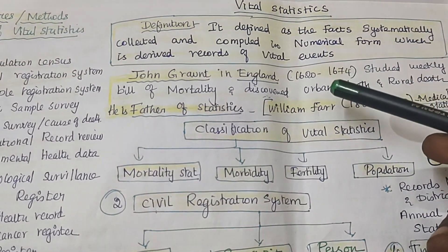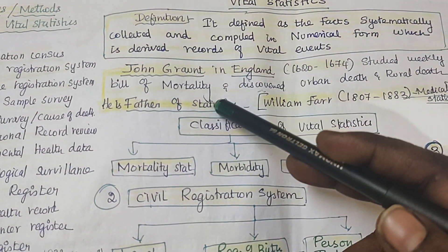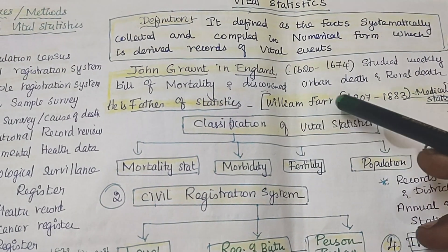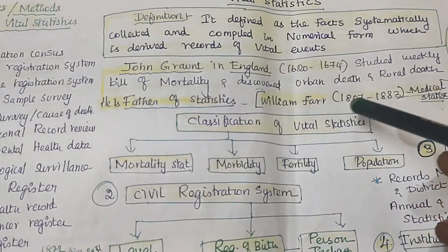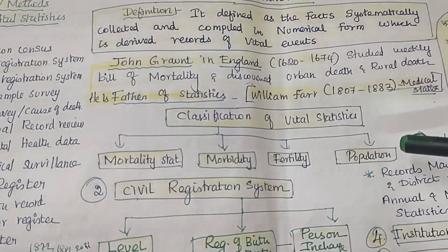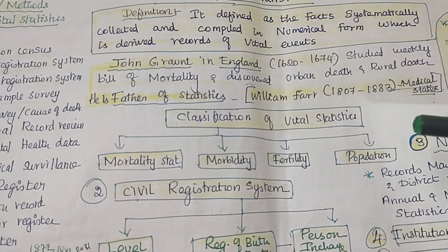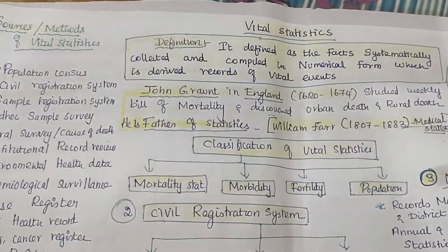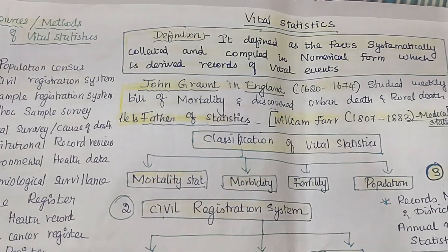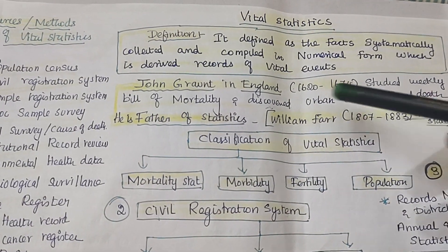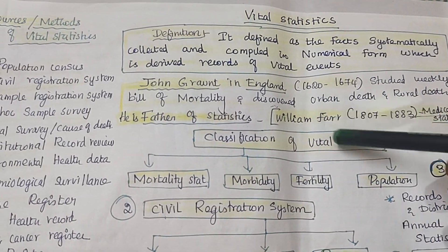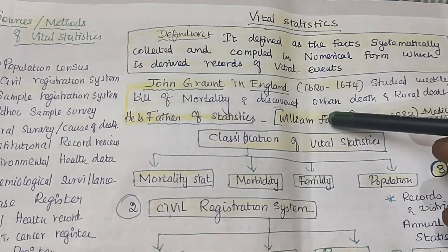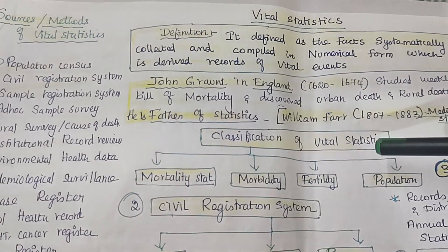John Graunt is called the father of vital statistics. William Farr collected medical statistics — what are all the disease conditions. So he is regarded as the father of medical statistics.